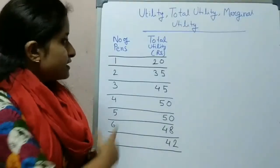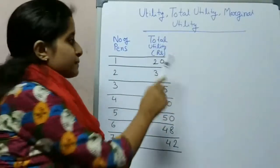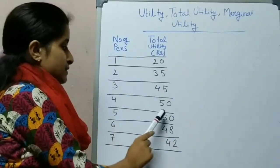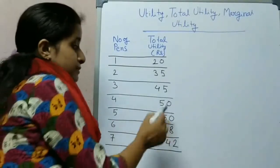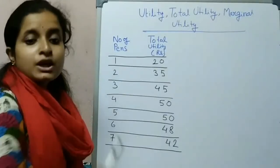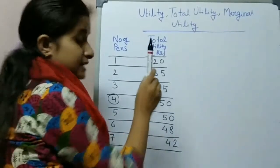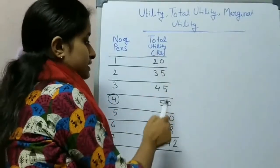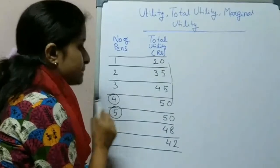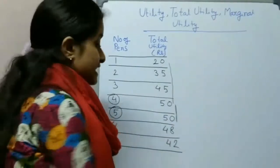We can explain it with this table. This person wants to spend 20 rupees for 1 pen, 35 rupees for 2 pens, 45 rupees for 3 pens, 50 rupees for 4 pens, and also 50 rupees for 5 pens. Then 48 rupees for 6 pens and 42 rupees for 7 pens. So up to 4 pens, the utility of the pen increases. At 5 pens, the utility is the same, and after 5, at 6 and 7, total utility decreases.